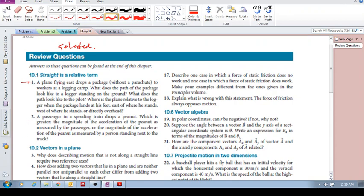Question 1. We have a plane flying east, drops a package to workers at a logging camp. What does the path of the package look like to a logger standing on the ground? So if there's the airplane and there's the package, and it's flying east, flying in that way.